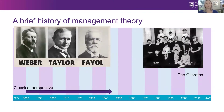The classical perspective contains three subfields, each with slightly different emphasis: scientific management, bureaucratic organizations, and administrative principles.